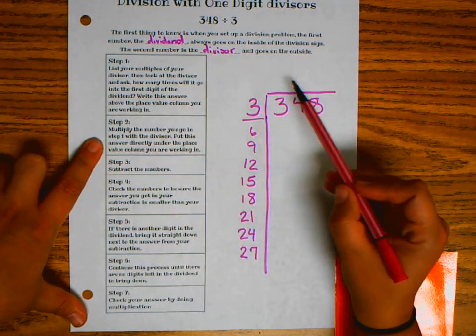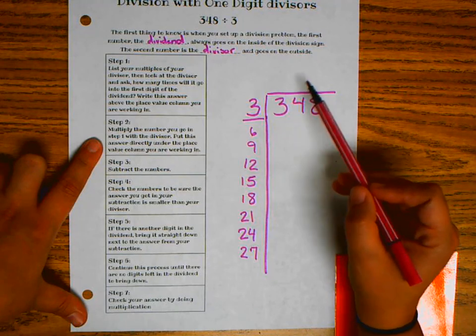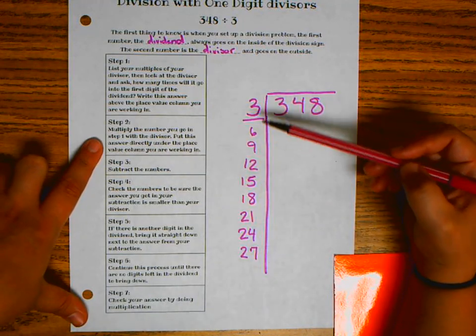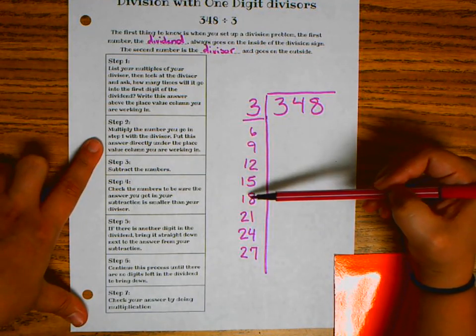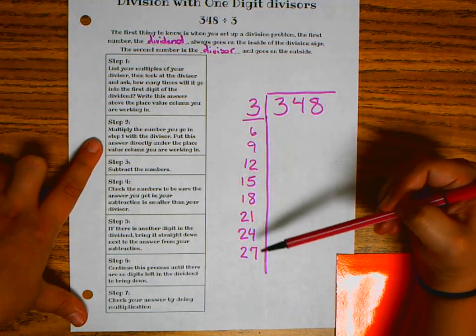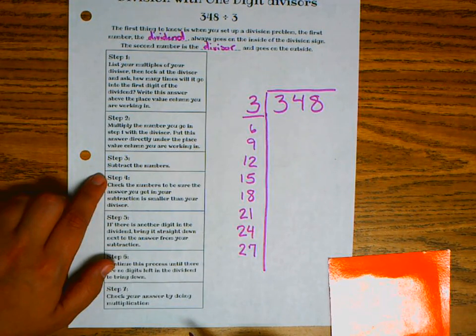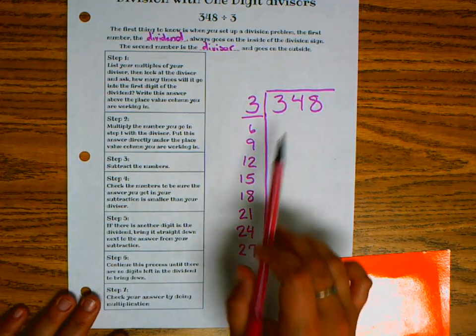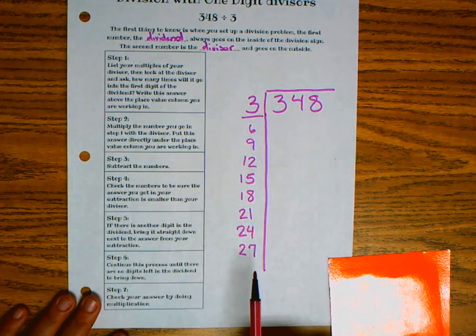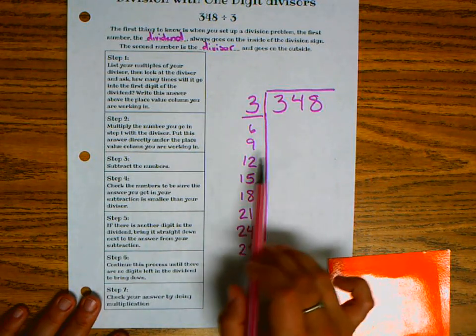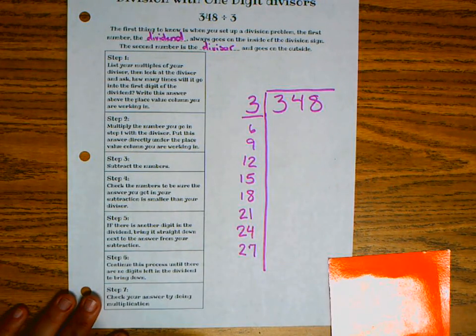So the number that's going to go at the top for the quotient, that's the groups. So this is one group of 3, up to 9 groups. So that would be the number that goes on the top. Then you have to subtract your number. You have to make sure that it is the smallest number. So once you subtract, you have your smallest number. It can't be larger than your divisor.